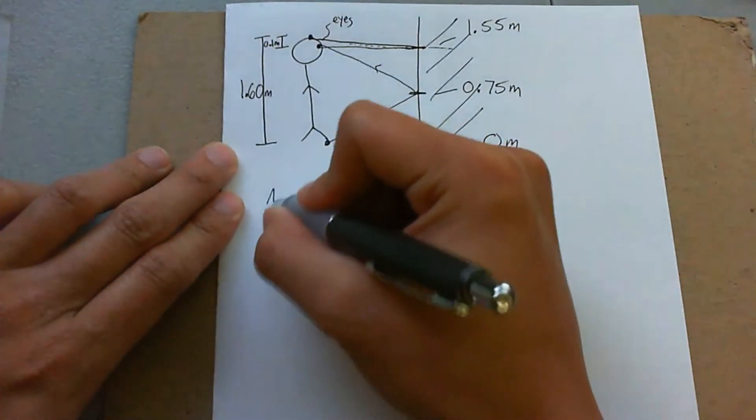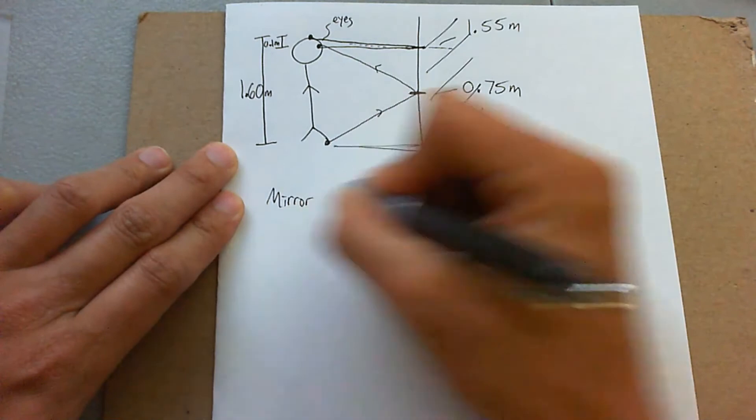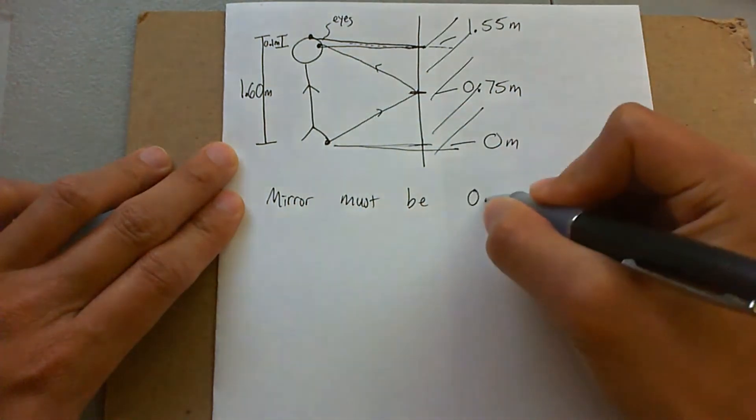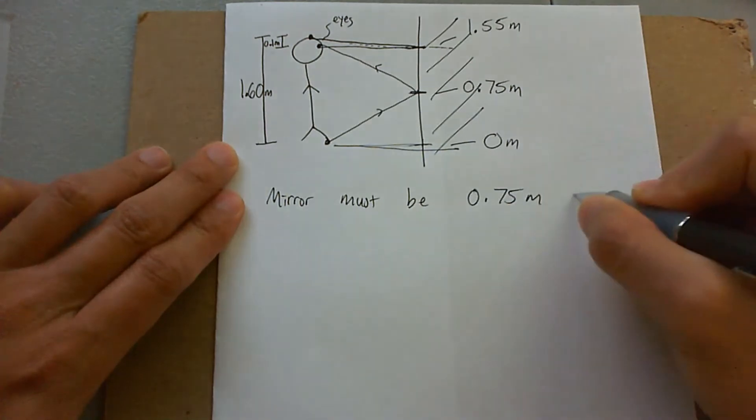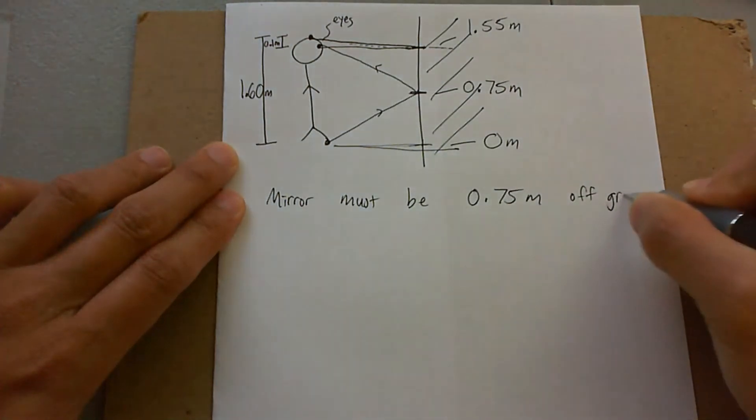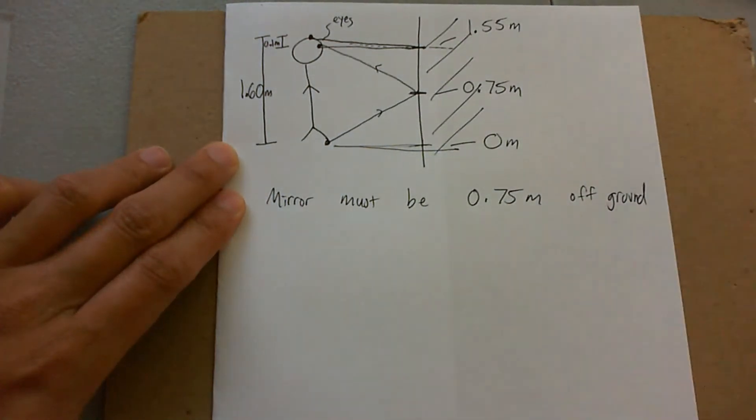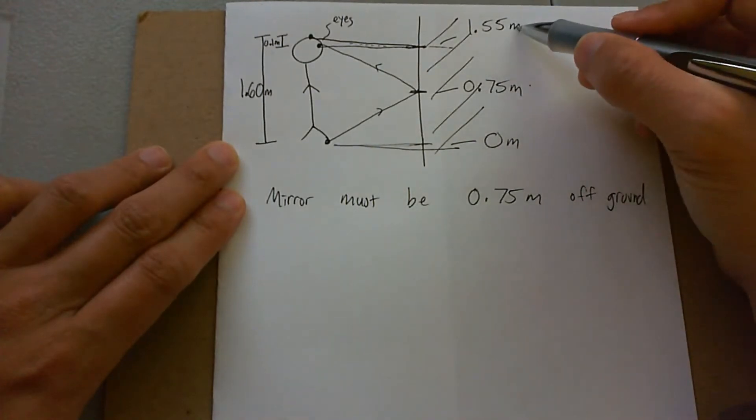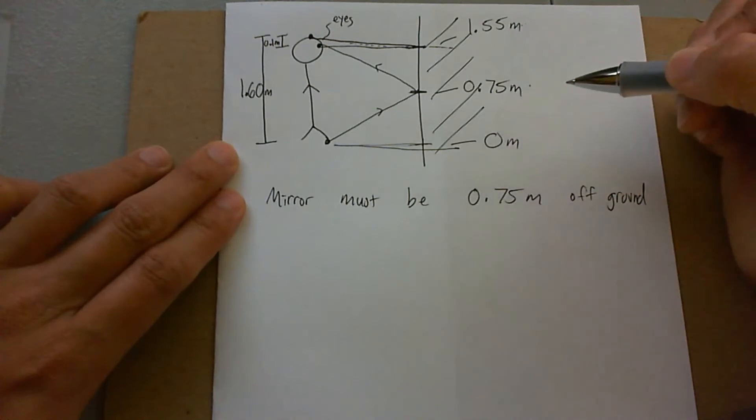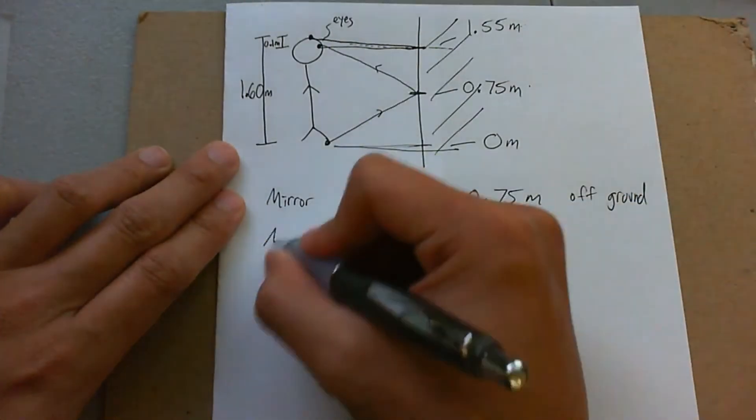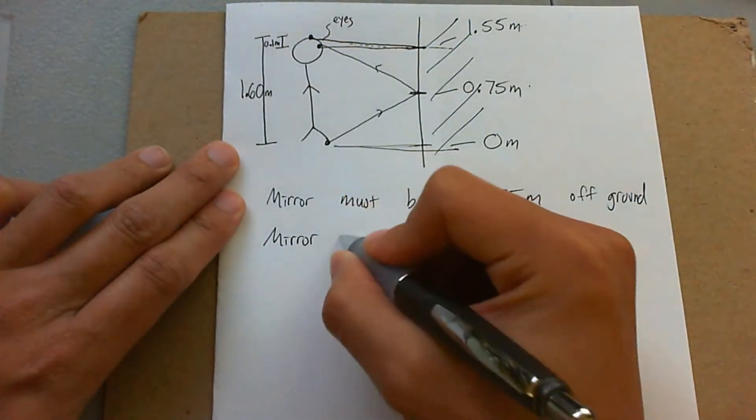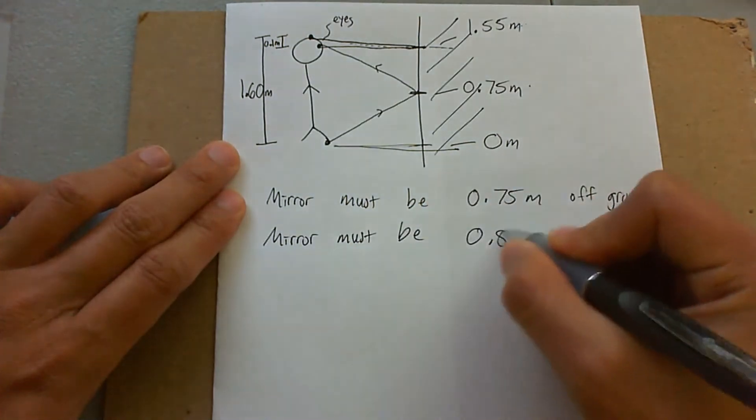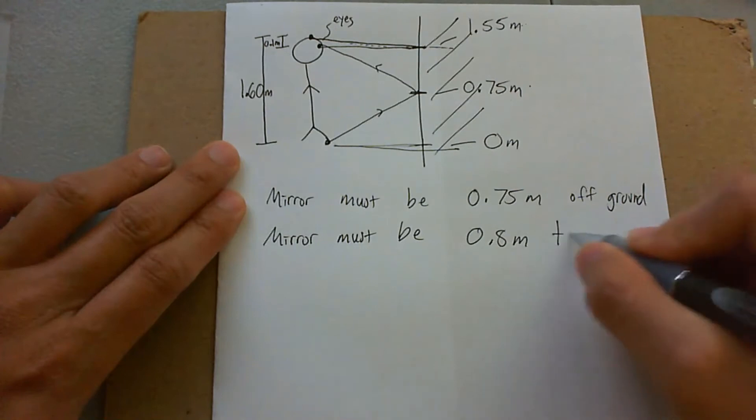The mirror must be 0.75 meters off the ground. And the mirror's height needs to be 1.55 minus 0.75 meters, and that comes out to be 0.8 meters tall.